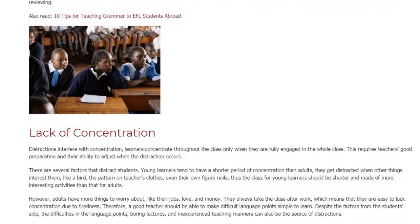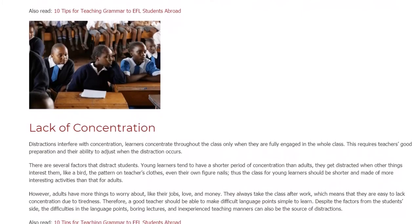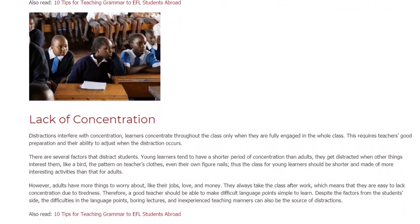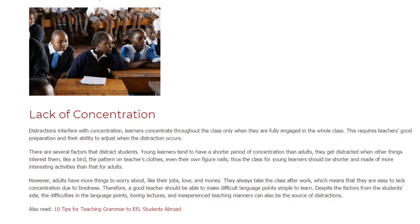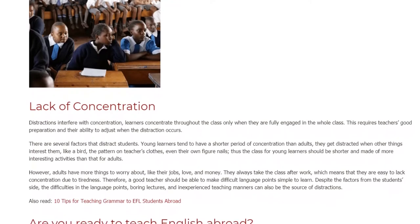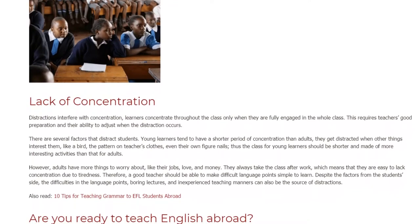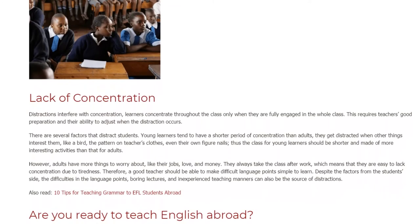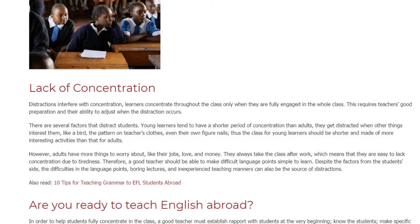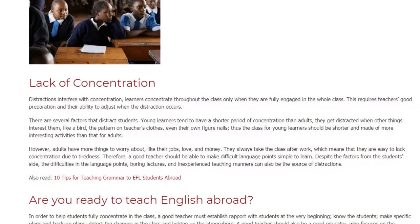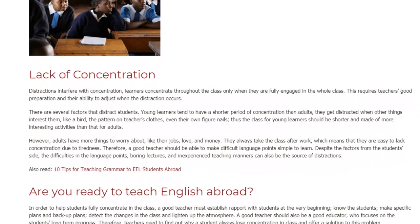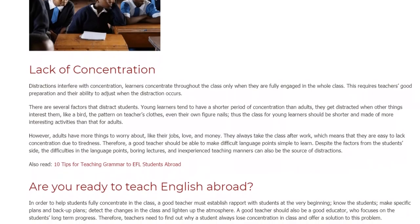Lack of Concentration. Distractions interfere with concentration. Learners concentrate throughout class only when they are fully engaged. This requires good teacher preparation and the ability to adjust when distraction occurs. Young learners tend to have a shorter concentration span than adults. They get distracted when other things interest them — like a bird, the pattern on the teacher's clothes, or even their own fingernails. Thus, classes for young learners should be shorter and made up of more interesting activities than those for adults.